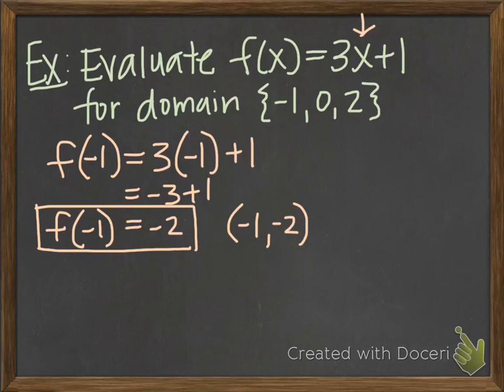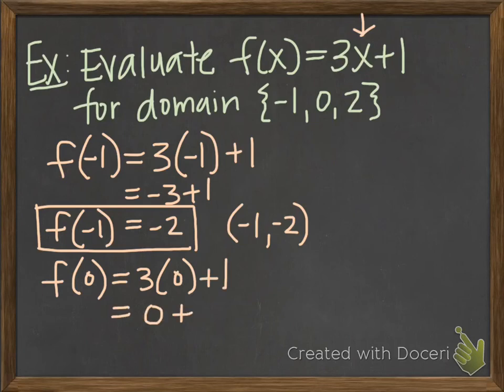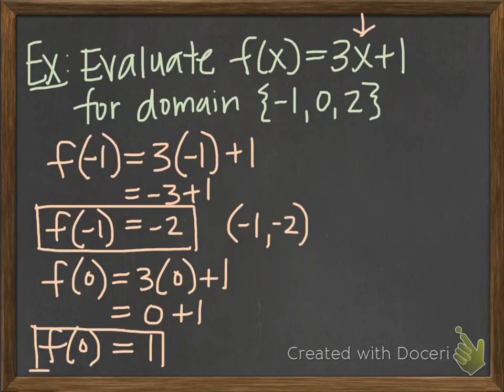Now we're going to do it for the next one. f of 0, when my input is 0, I'll have 3 times 0 plus 1. 3 times 0 is 0, 0 plus 1 is 1. So my output is 1 when my input is 0. And as an ordered pair, my x value, when it's 0, my output is 1.